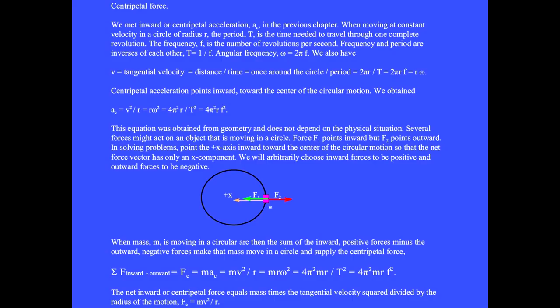This green mass is in circular motion. We met inward or centripetal acceleration aC in the previous chapter. When moving at constant velocity in a circle of radius R, the period T is the time needed to travel through one complete revolution. The frequency F is the number of revolutions per second. Frequency and period are inverses of each other.